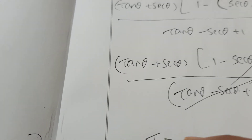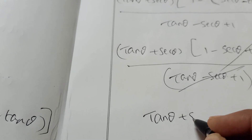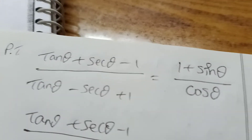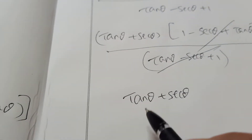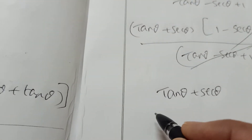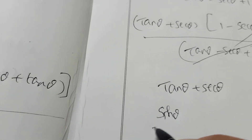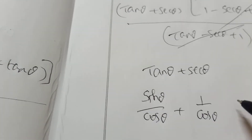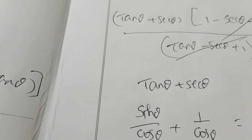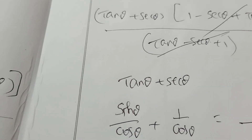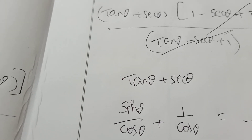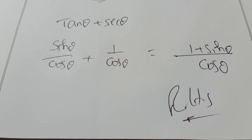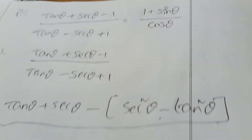Now convert tan θ plus sec θ into sine and cosine terms, since the answer is asked in terms of sine and cos. Tan θ equals sin θ over cos θ, and sec θ equals 1 over cos θ. Taking LCM as cos θ, you get (1 plus sin θ) divided by cos θ, which is the right hand side. Hence proved.